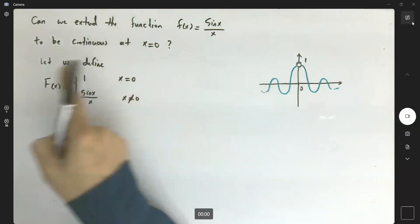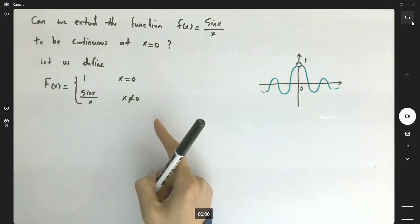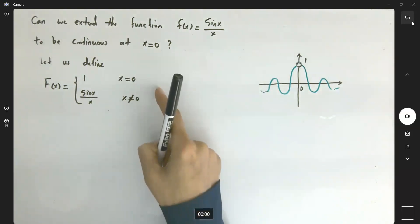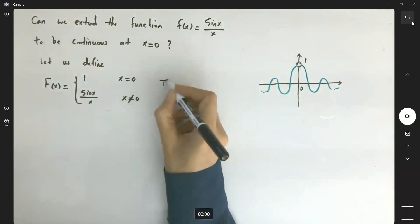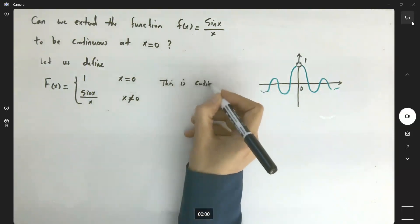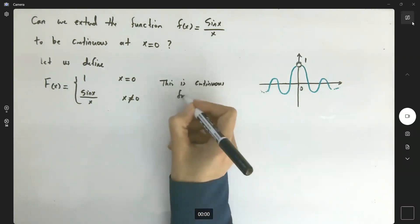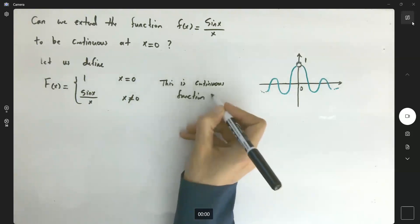We claim that this extension is a continuous function. Why is that? What's the reason?